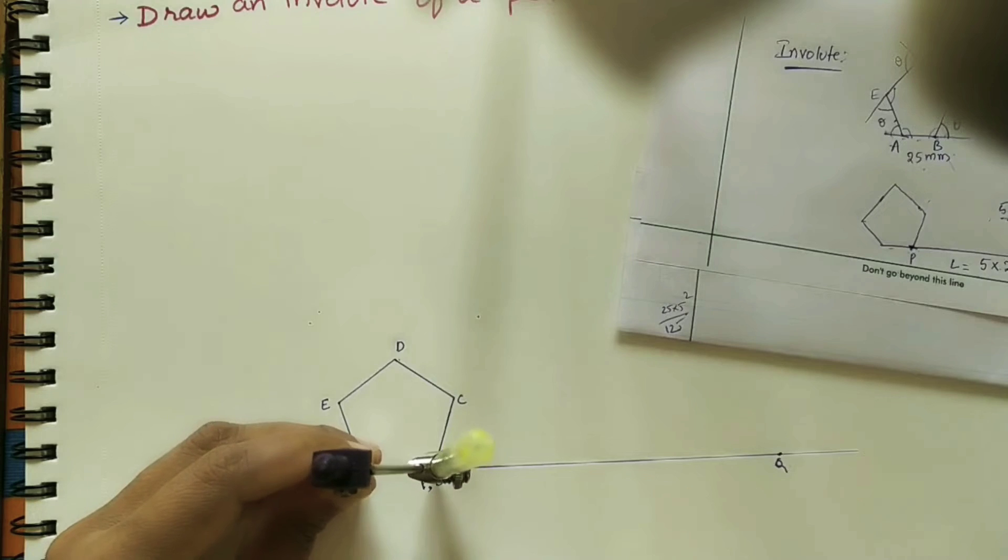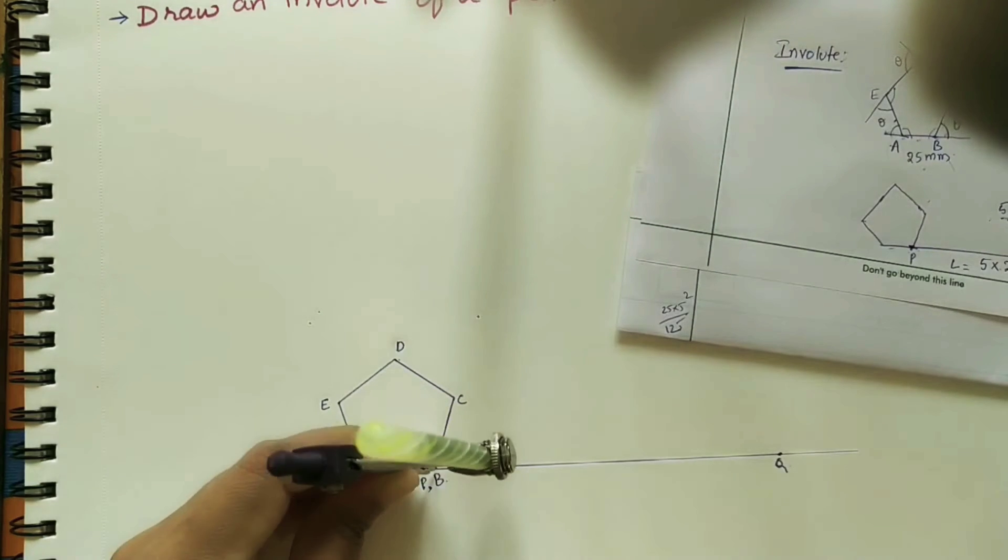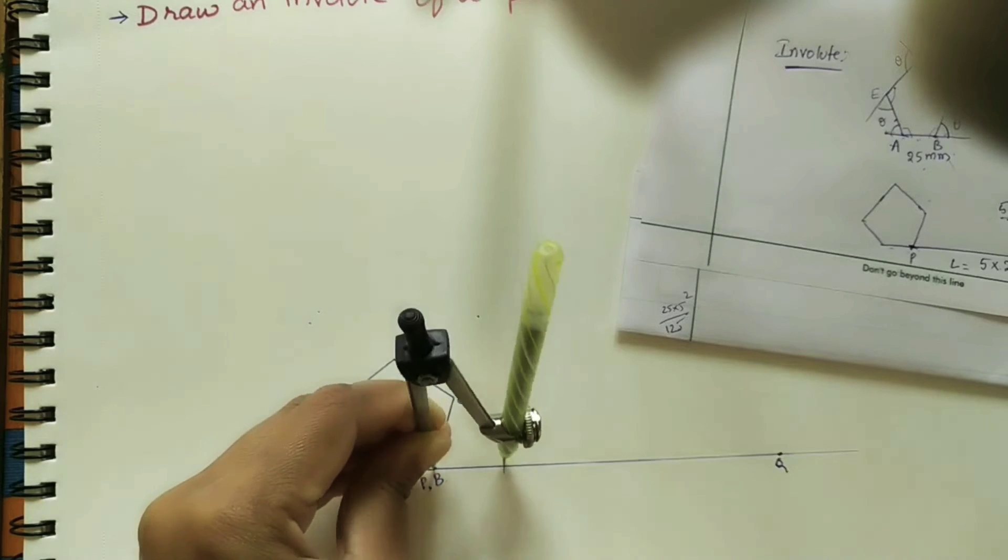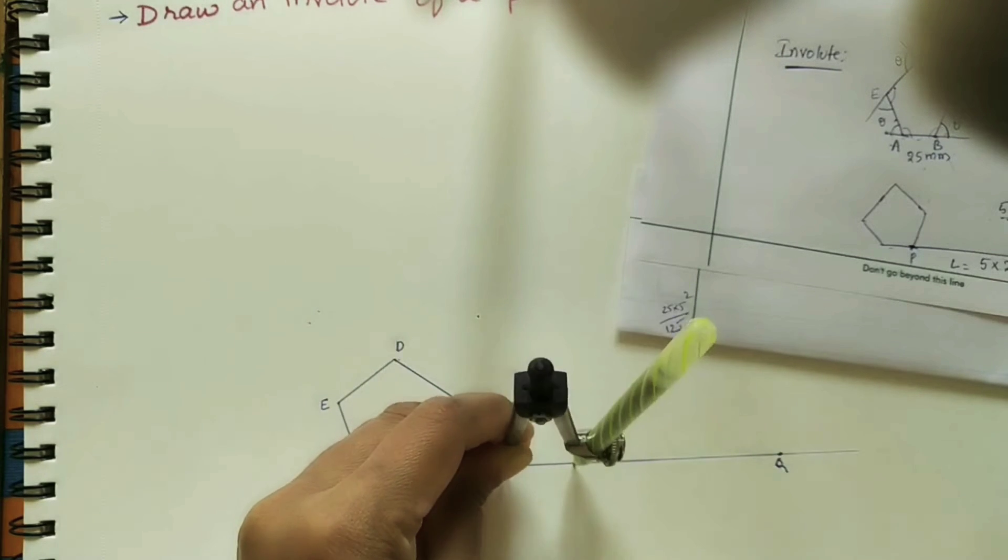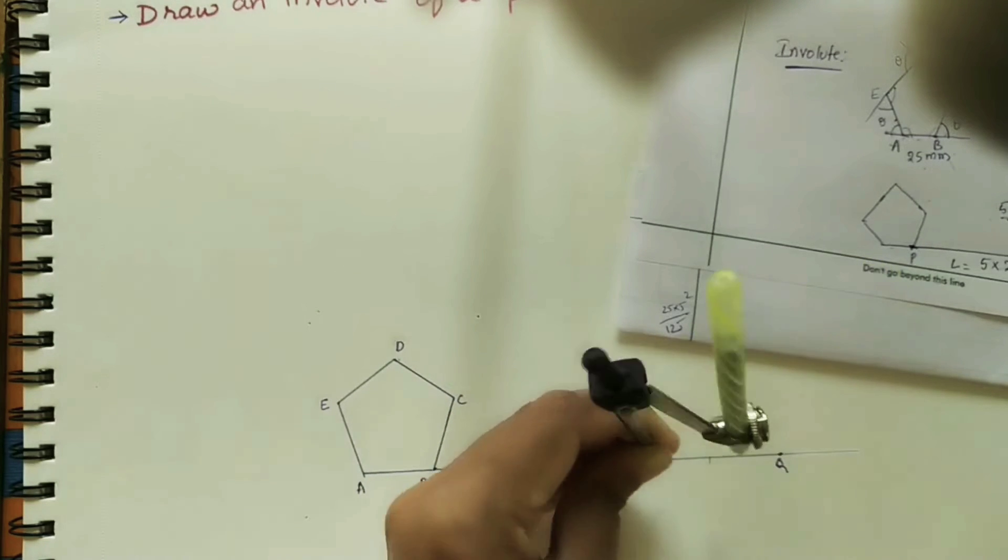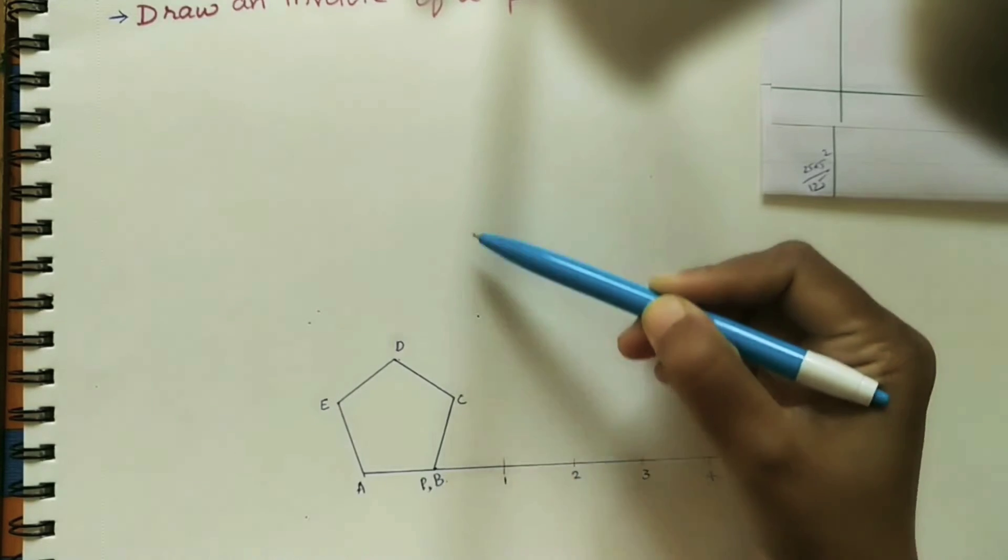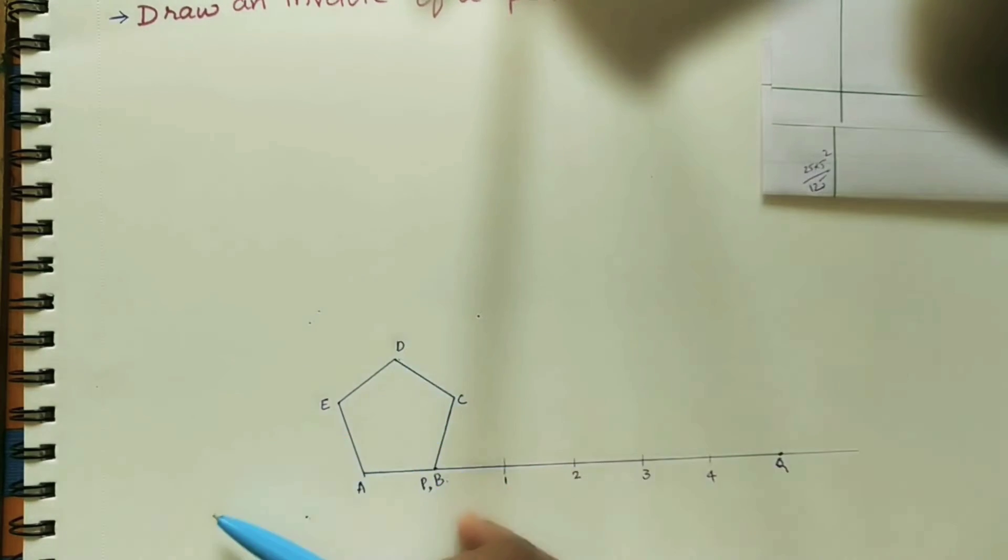Take 2.5cm, already we have marked on the pentagon. Take that length, divide this line into five parts. First part, second part, third part, fourth part, and last one is the fifth one. So mark the points: one, two, three, four. So we have divided five parts. At all these sides, draw some length of the line.